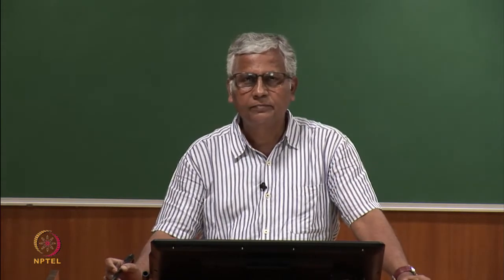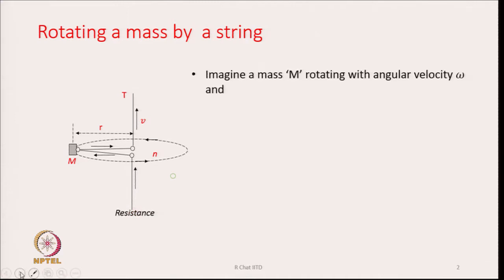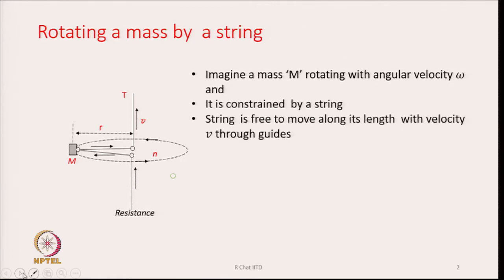We start with a system that consists of a rotating mass tied by a string. The mass m is rotating following a circular path. The string passes through guides as shown here, and there is resistance to the string. Because of the resistance, the tension acting on it is T, and the string is also moving with a velocity V along its length.